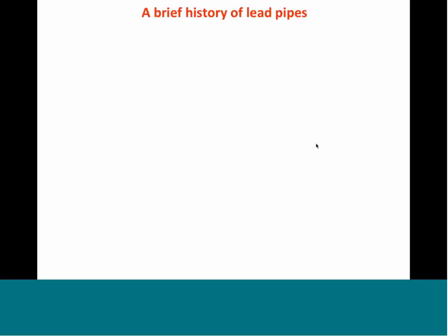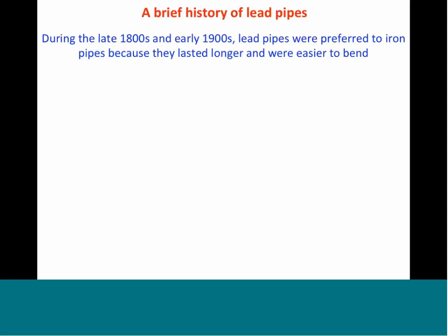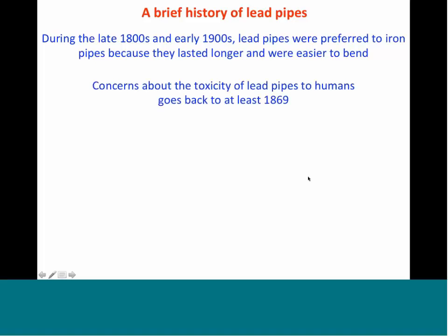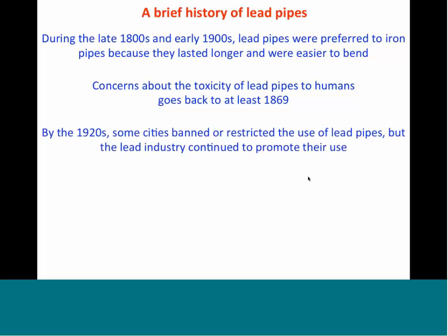First, I think we need to understand why we're talking about lead and lead pipes. Lead pipes were preferred over iron pipes in the late 1800s and early 1900s because they'd last longer — they wouldn't rust out like iron pipes — and they were easier to bend since lead is a fairly soft material. But there were problems, and those problems were recognized. Some of the first medical reports go back to the 1860s, when people were already concerned about lead poisoning.